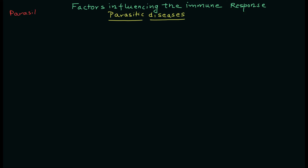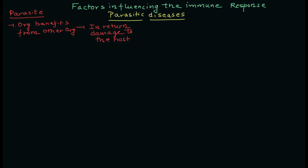First, we need to understand what a parasite is. Parasites are organisms that depend on the host and get benefits from the host, but in return they only damage the host by various means — they can degrade the components of the host, degrade and kill cells, and so on. That is why we call them parasites; they are not going to provide any benefit to the host.